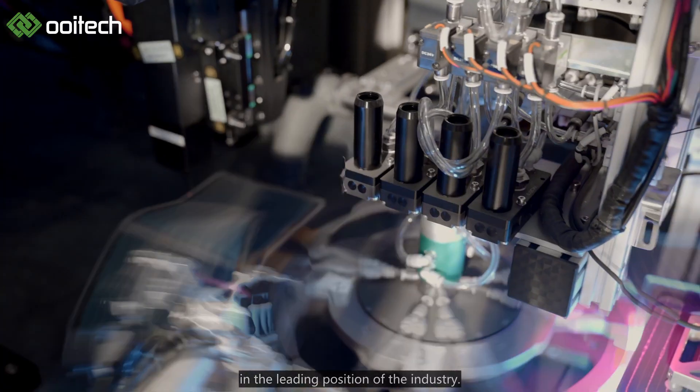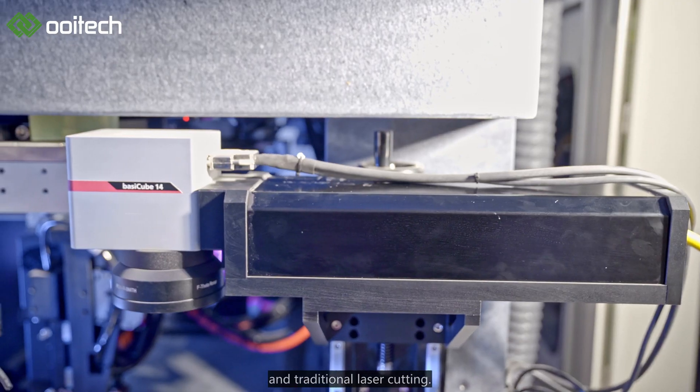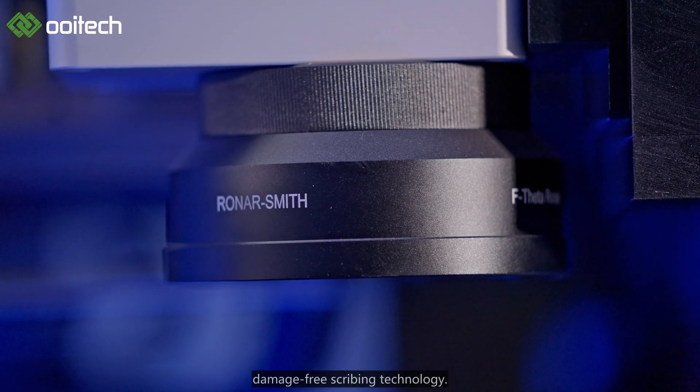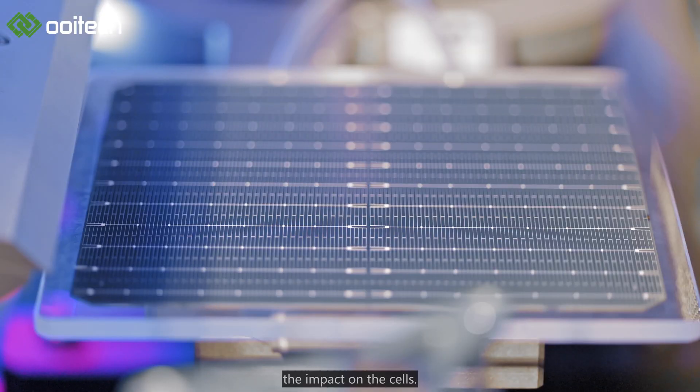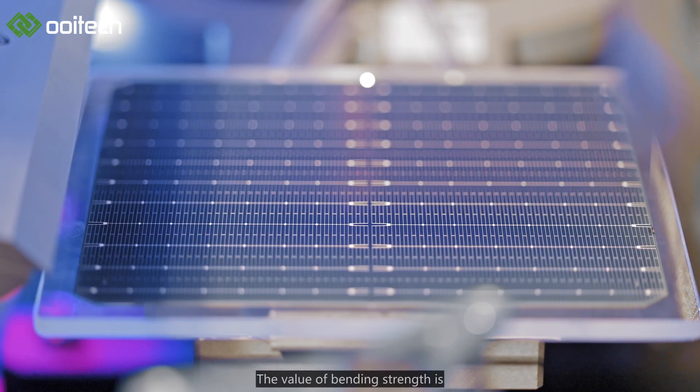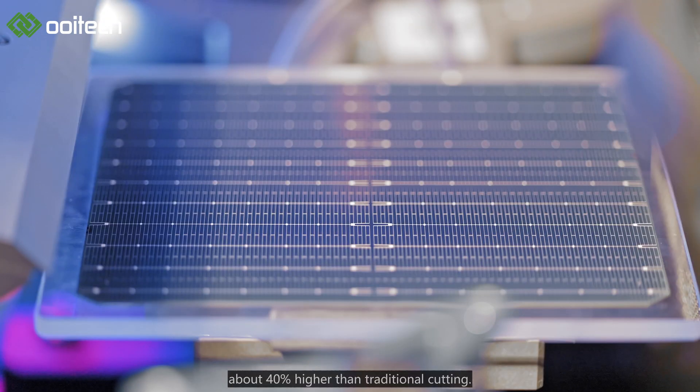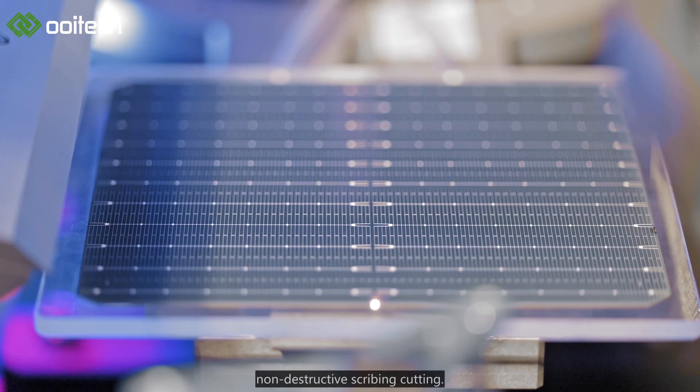The NDC machine is in the leading position of the industry compared to water-spraying non-destructive cutting and traditional laser cutting. By using unique dry waterless damage-free scribing technology, the Oeditech NDC machine reduces impact on cells. The cut cell has higher bending strength, about 40% higher than traditional cutting and about 10% higher than the industry's water-spray non-destructive scribing cutting.